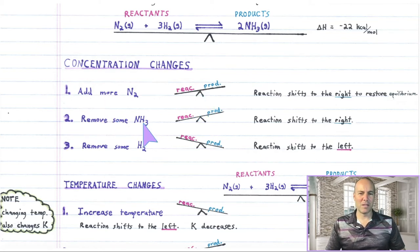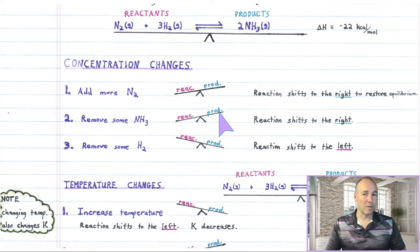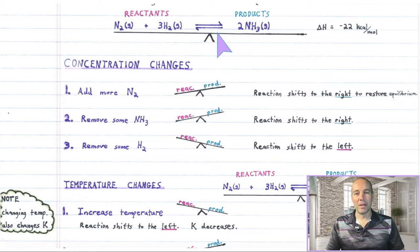For another disturbance, this time let's remove some product ammonia. If you remove product from a system which is at equilibrium, now the product side is kind of light. That messed up the proportions of chemicals, so the equilibrium proportions are messed up. To get back to equilibrium, some of the reactant has to shift to form more product. And that will get the system back to equilibrium. So it shifts to the right again.